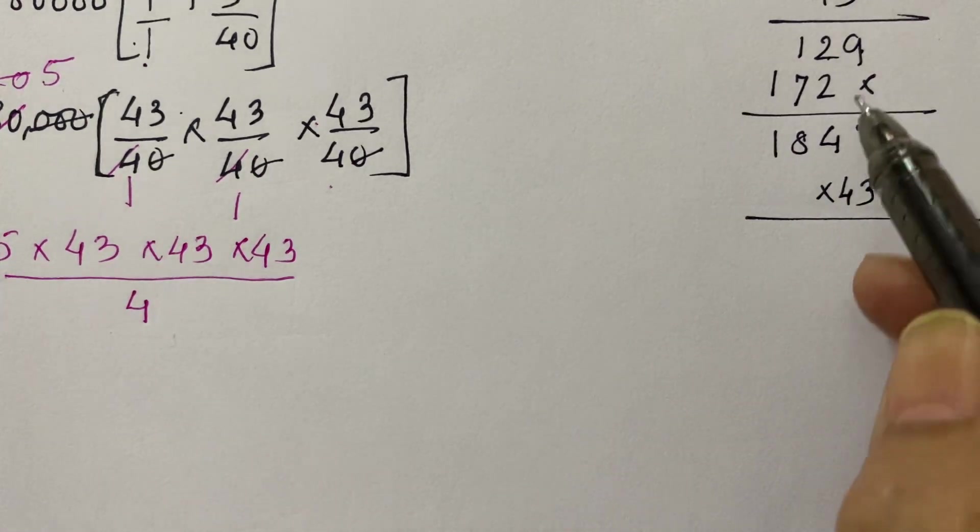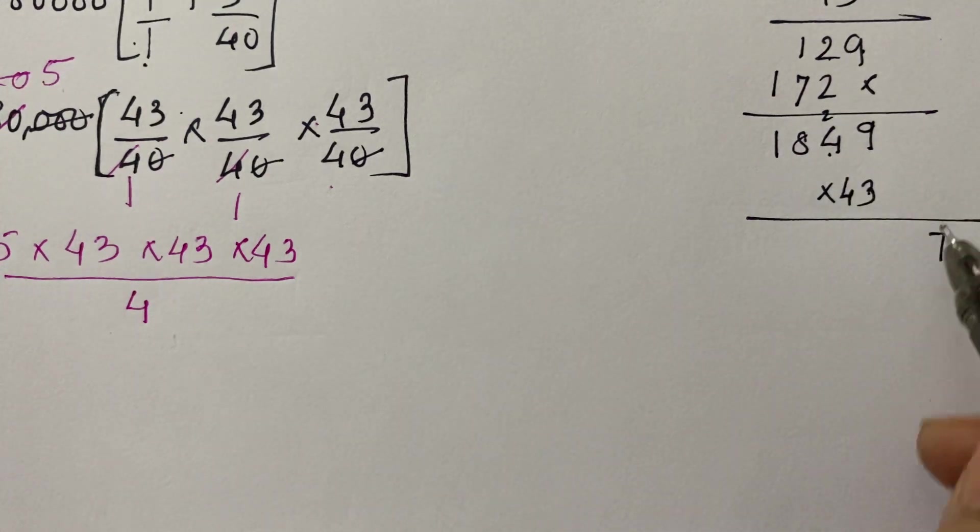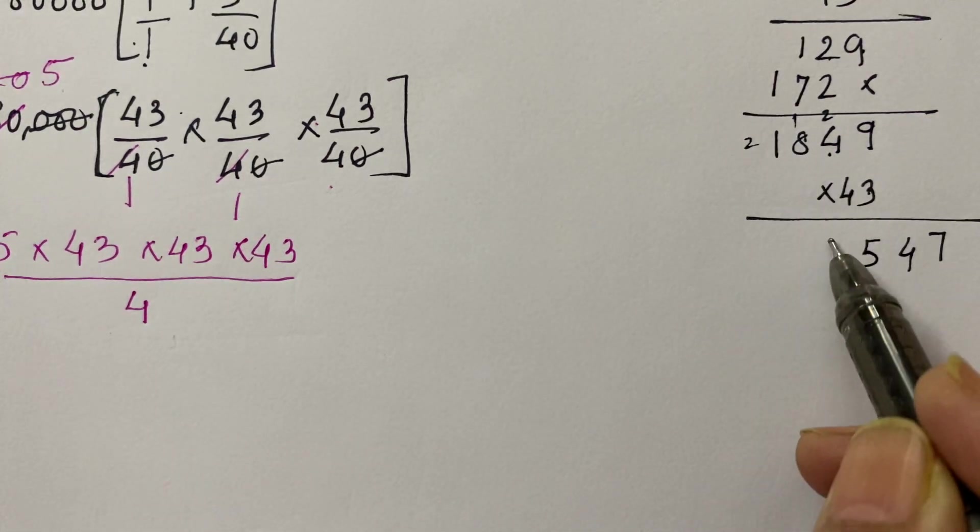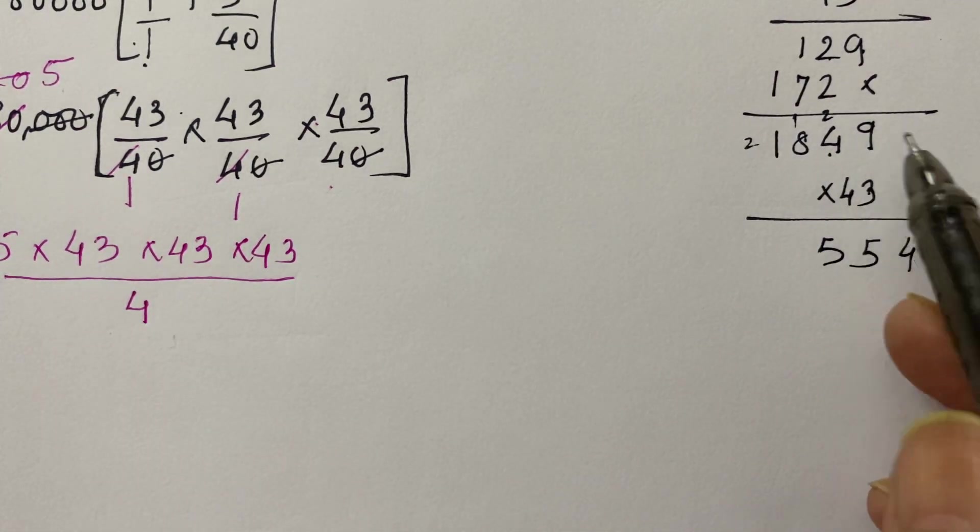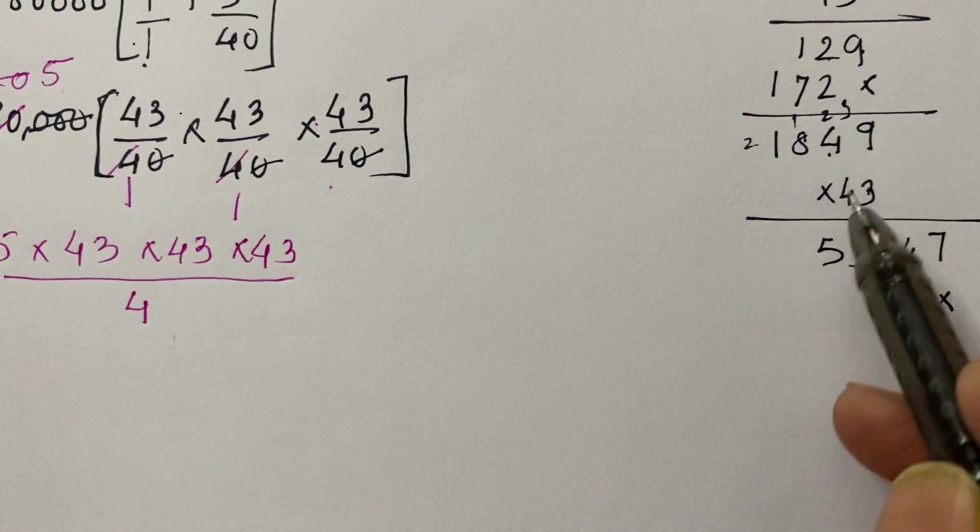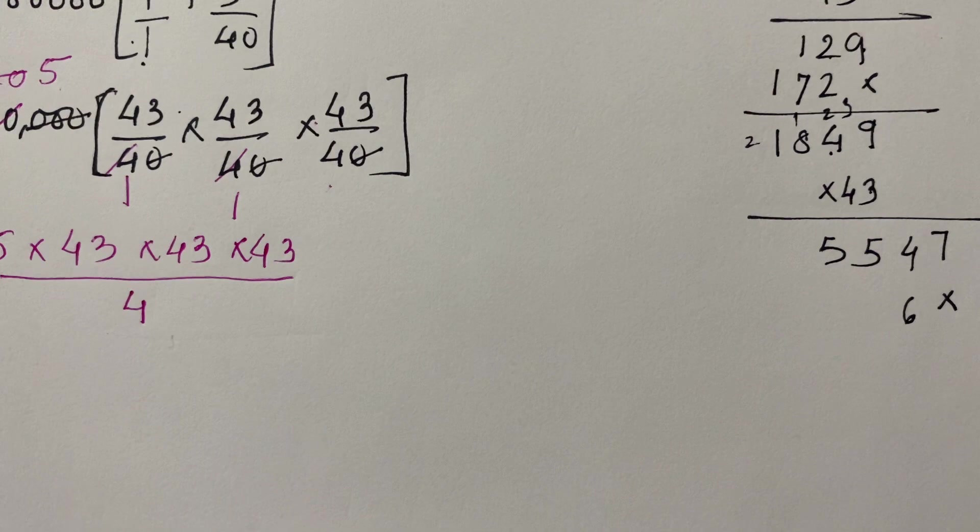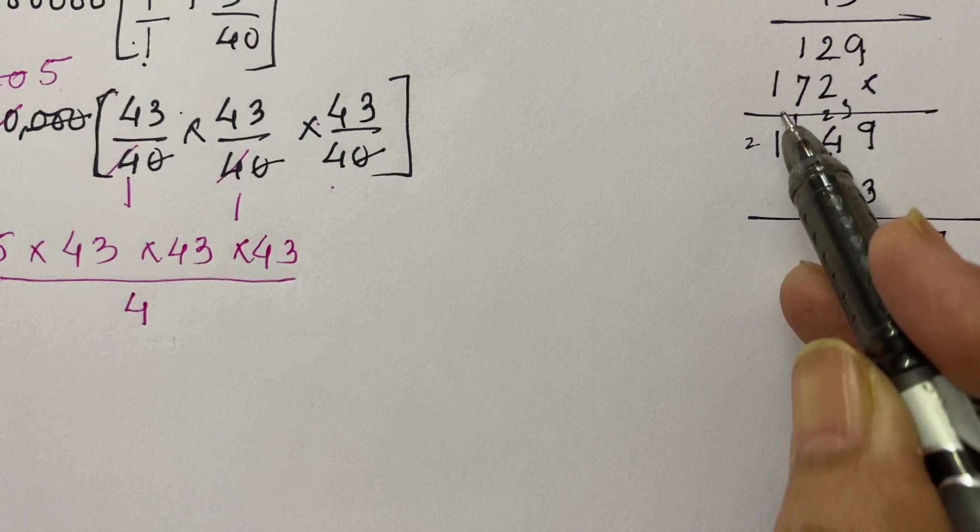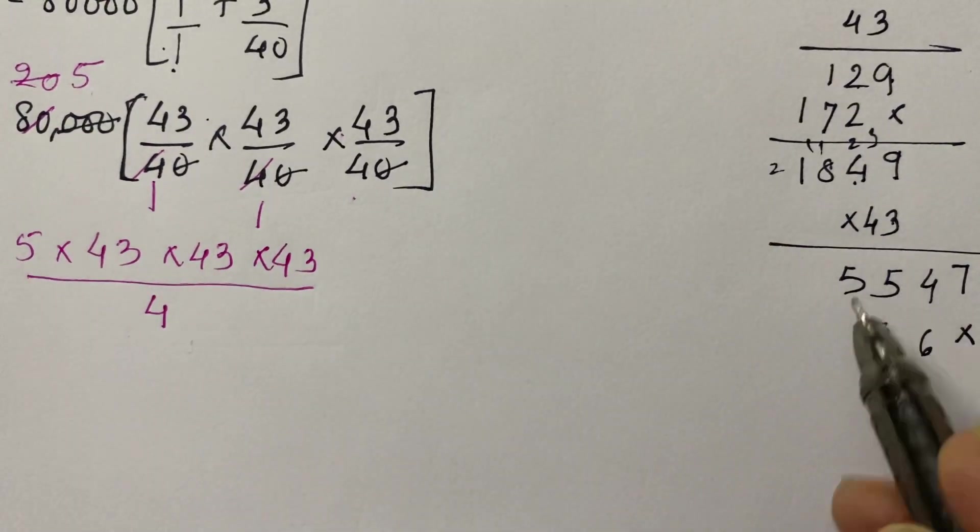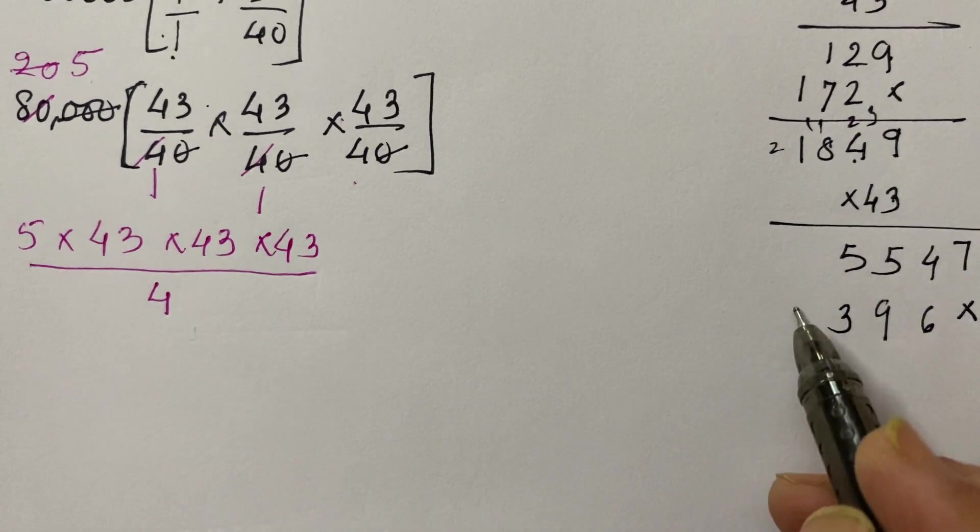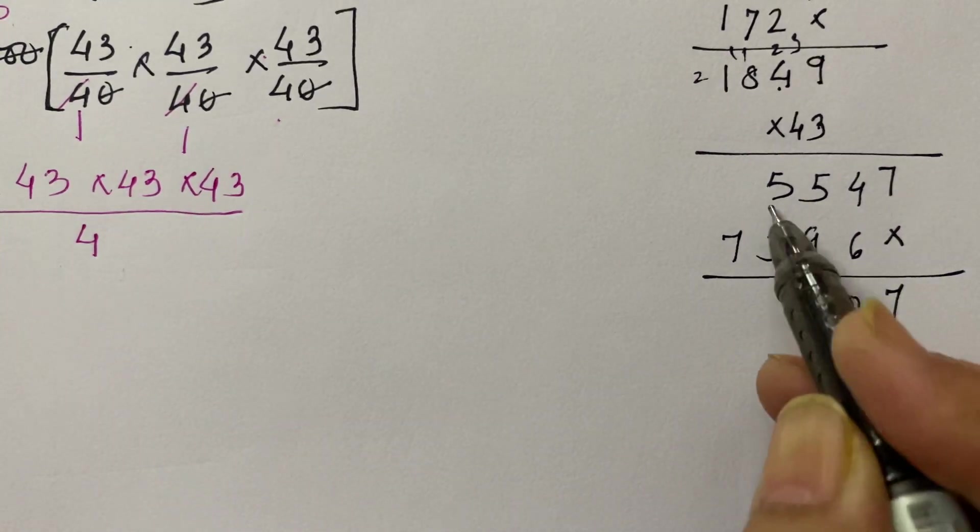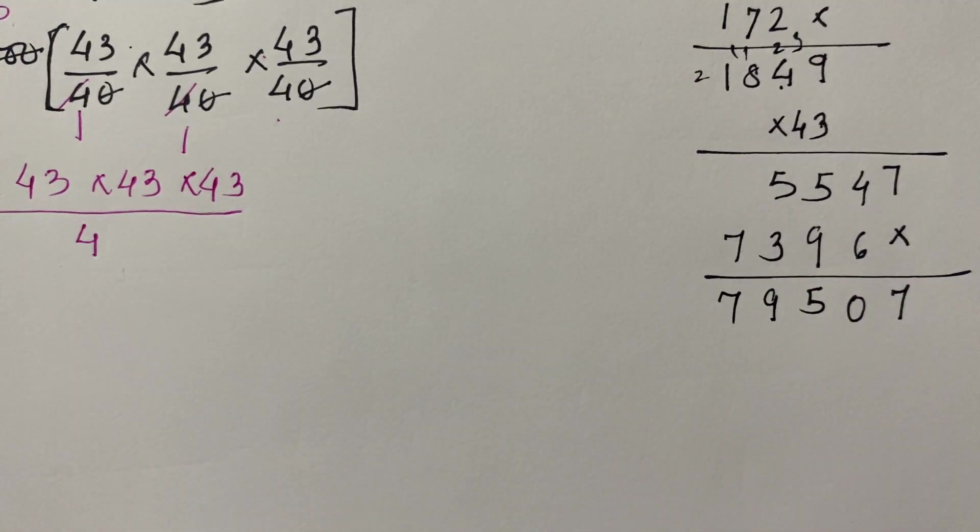Then you have to multiply this by 43 again. So, 9 threes are 27 carry 2, 3 fours are 12, 12 plus 2 is 14, 8 threes are 24 and 1, 25, 3 ones are 3 and 2, 5. Then by 4: 9 fours are 36 carry 3, 4 fours are 16, 16 plus 3 is 19, 8 fours are 32, 32 plus 1, 33 carry 3, 4 ones are 4 and 3, 7. So 7, 0, then 15, then 9 and 7. This becomes 7.